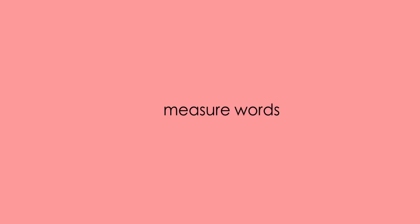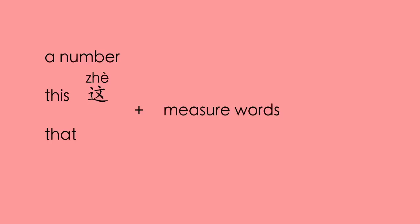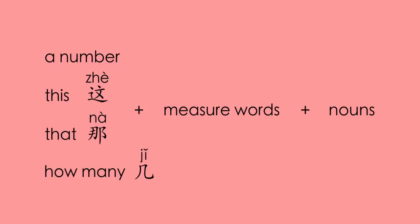Measure words are used after a number — this (这, zhè), that (那, nà), or how many (几, jǐ) — and before nouns.